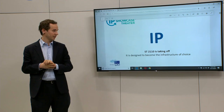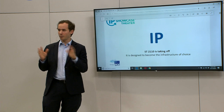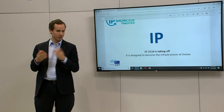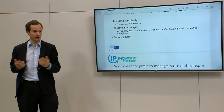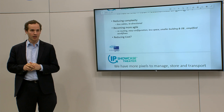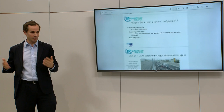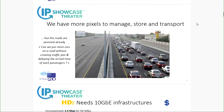SMPTE ST 2110 is taking off — it is designed to become the infrastructure of choice. Everybody is speaking IP; forget about SDI. But there are some challenges. What we expect from IP is reducing complexity, less cables going bi-directional, becoming more agile, re-routing, easy configuration, less space, smaller building, smaller lobby, simplified workflow, and also reducing cost. Broadcast is going into cost reduction — we need to compete at infrastructure level with the IT world.